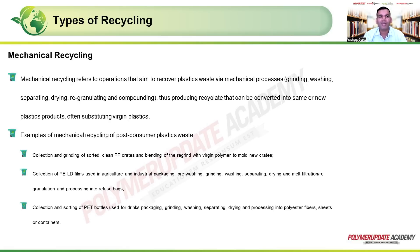Examples of mechanical recycling of post-consumer plastic waste include: collection and grinding of sorted, clean PP crates and blending the regrind with virgin polymer; collection of low-density polyethylene films from agriculture and industrial packaging, followed by pre-washing, grinding, washing, separating, drying, and re-granulating into refuse bags; and collection and sorting of PET bottles, processing them into polyester fiber, sheets, or containers.